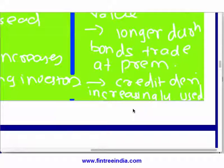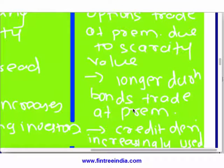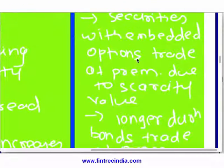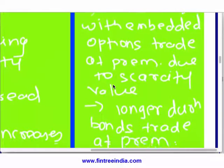In the curriculum there is a question where the question setter has taken one sentence from the Fabozzi handbook about how markets have evolved or changed over time. It writes down that sentence and gives a reference to the book, then asks what the implication of that sentence is on the bond market. The implications are: first, bonds with embedded options have a scarcity value; second, longer duration bonds trade at a premium; and third, credit derivatives are becoming more popular.